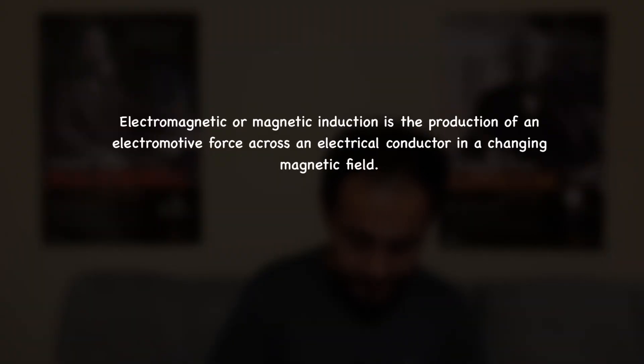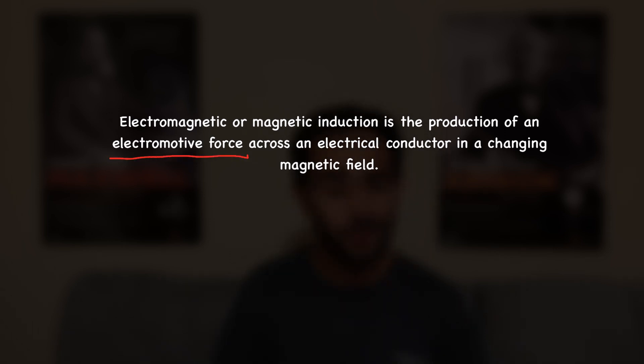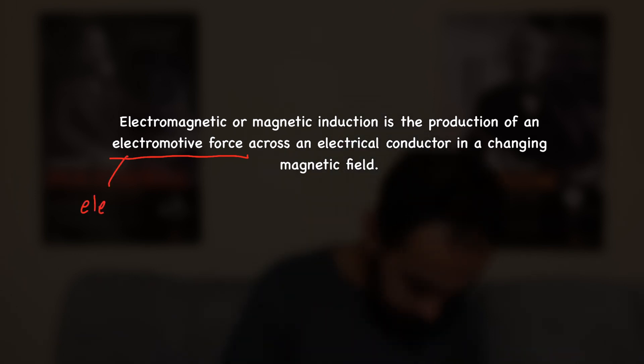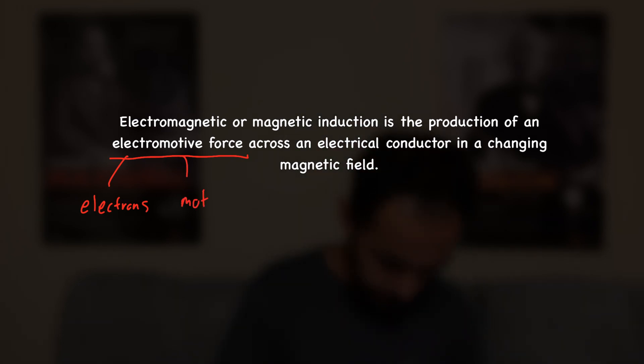So electromagnetic induction, the topic of this video, is the production or the creation of an electromotive force. Now that's a weird word — what does it mean? Well, 'electro' means relating to electrons, while 'motive' means motion. So electromotive means electrons in motion. And all that is, is electricity. Electricity is a bunch of electrons in motion.